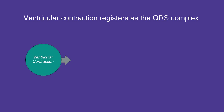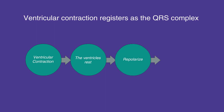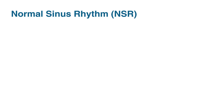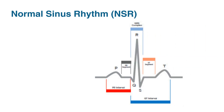Following ventricular contraction, the ventricles rest and repolarize, which registers as the T wave. The atria also repolarize, but this coincides with the QRS complex; therefore it cannot be observed on the ECG strip. The P wave, QRS complex, and T wave together at proper intervals are indicative of normal sinus rhythm, or NSR.